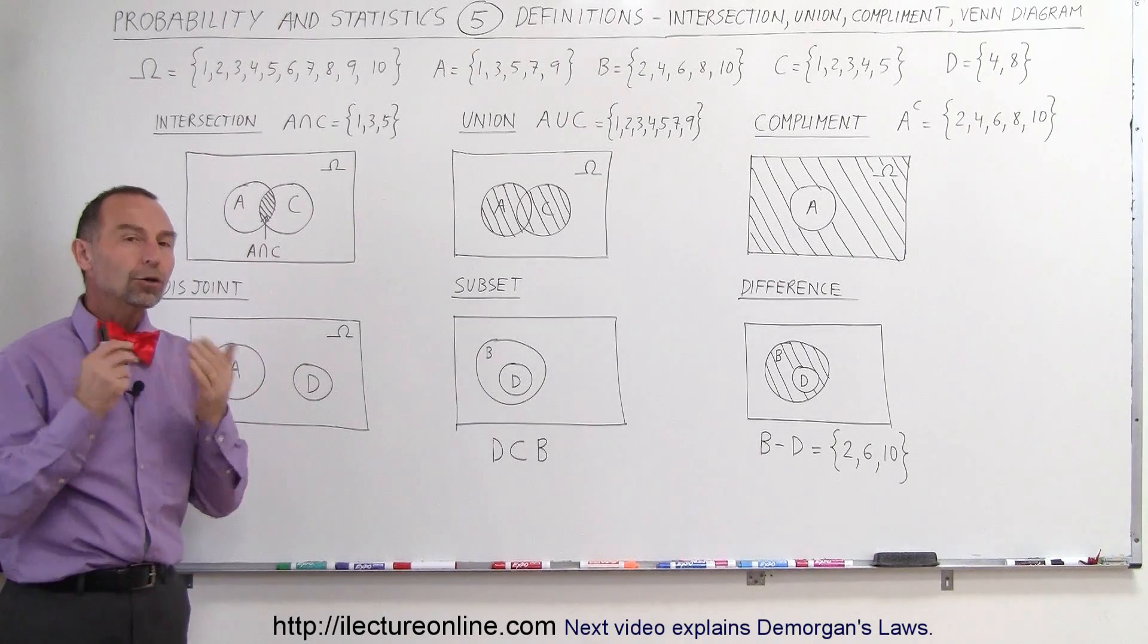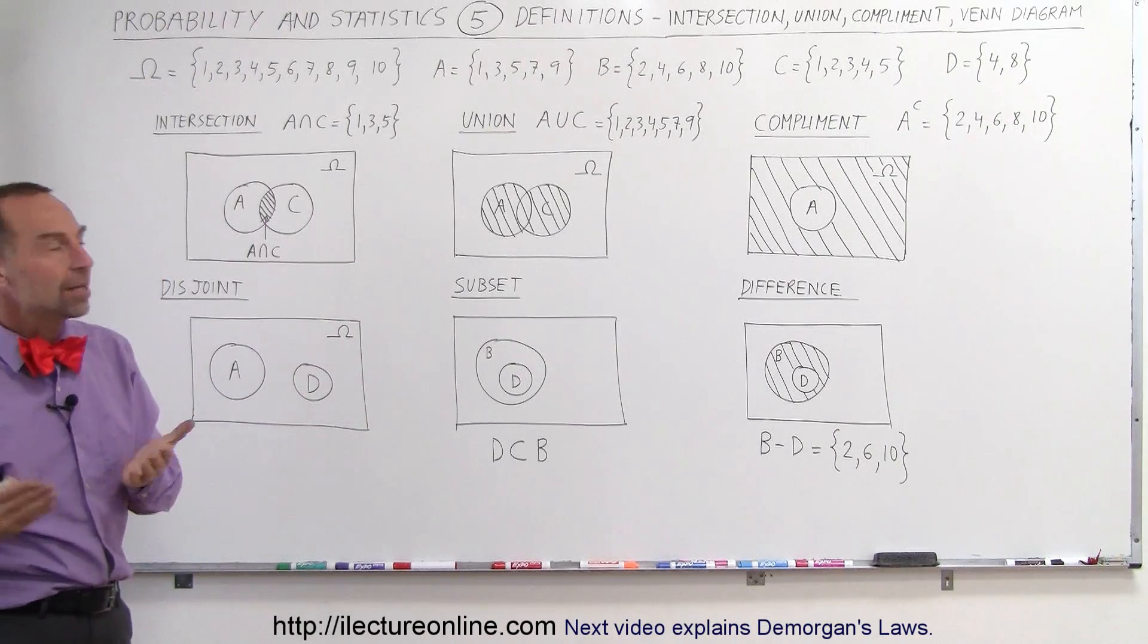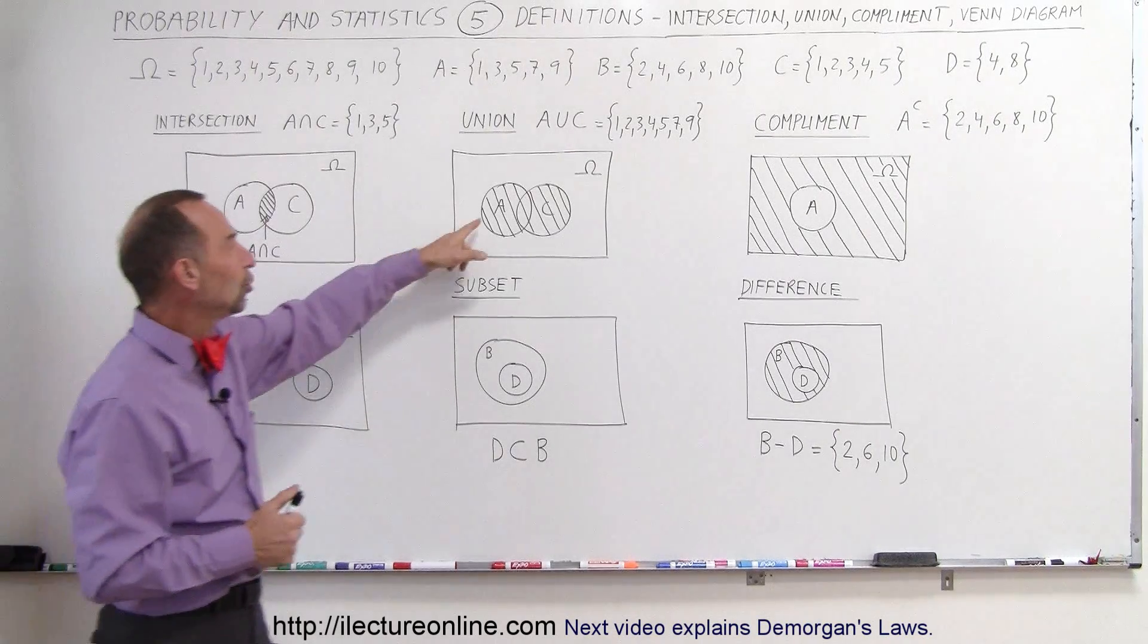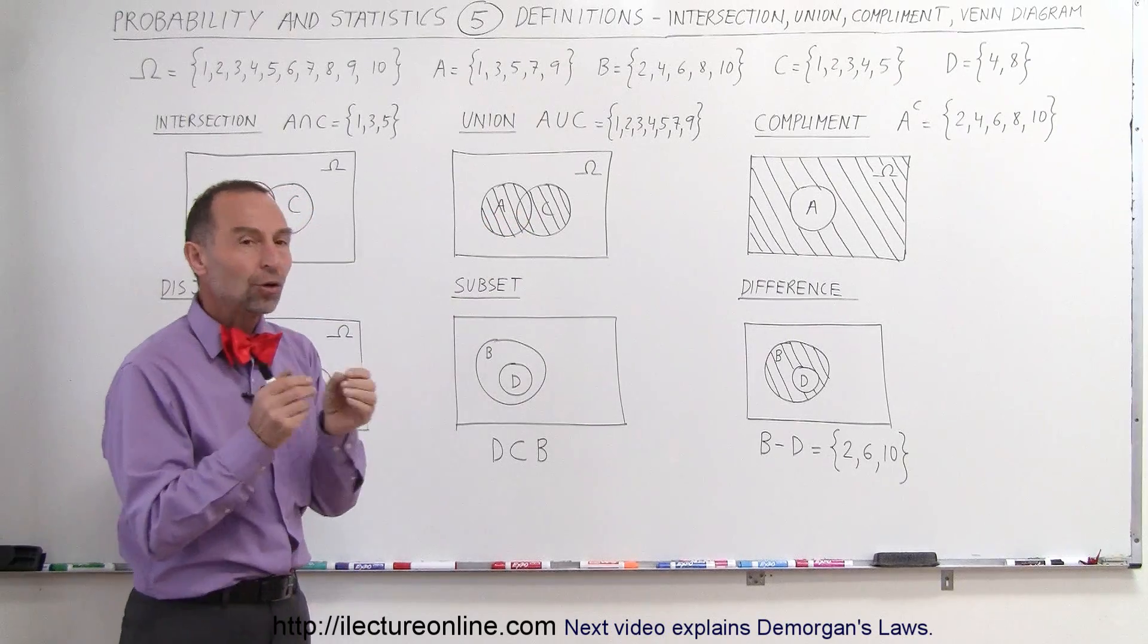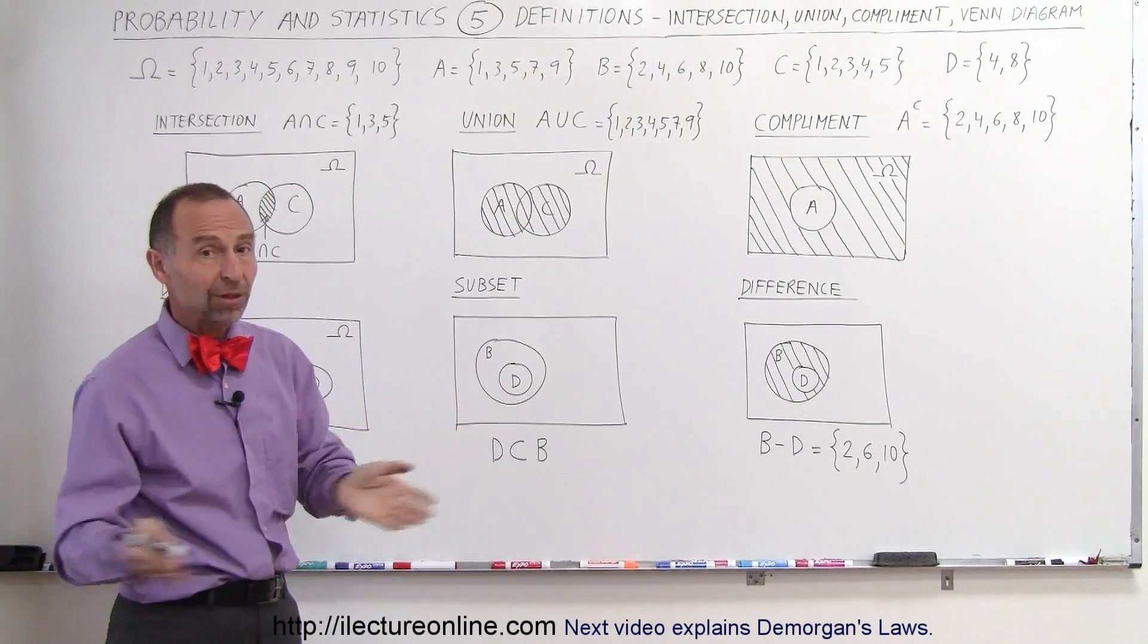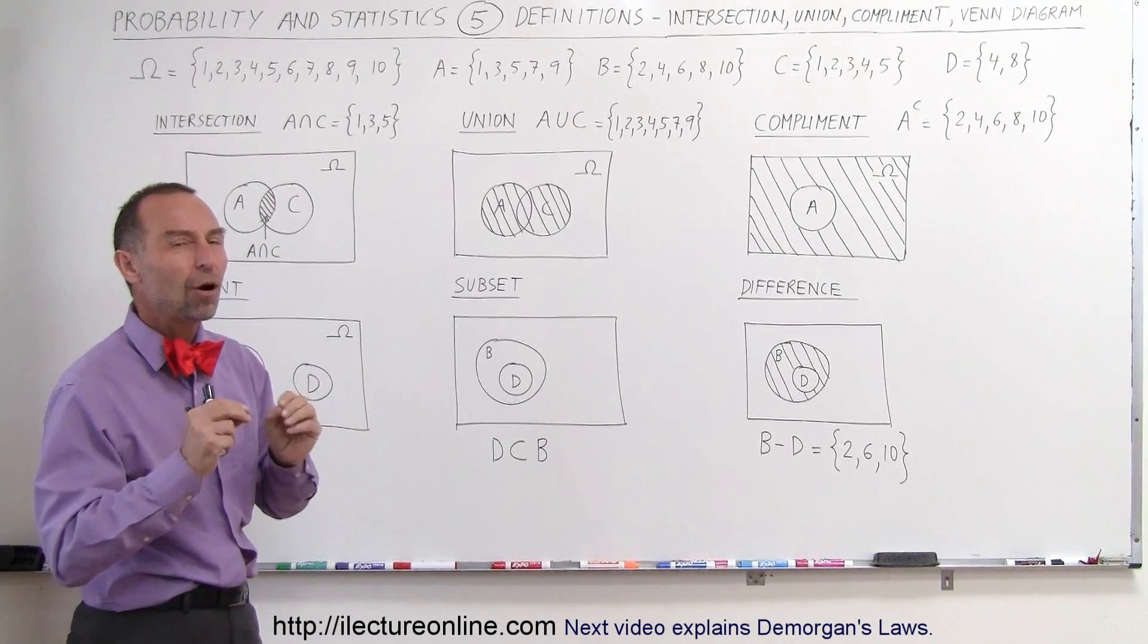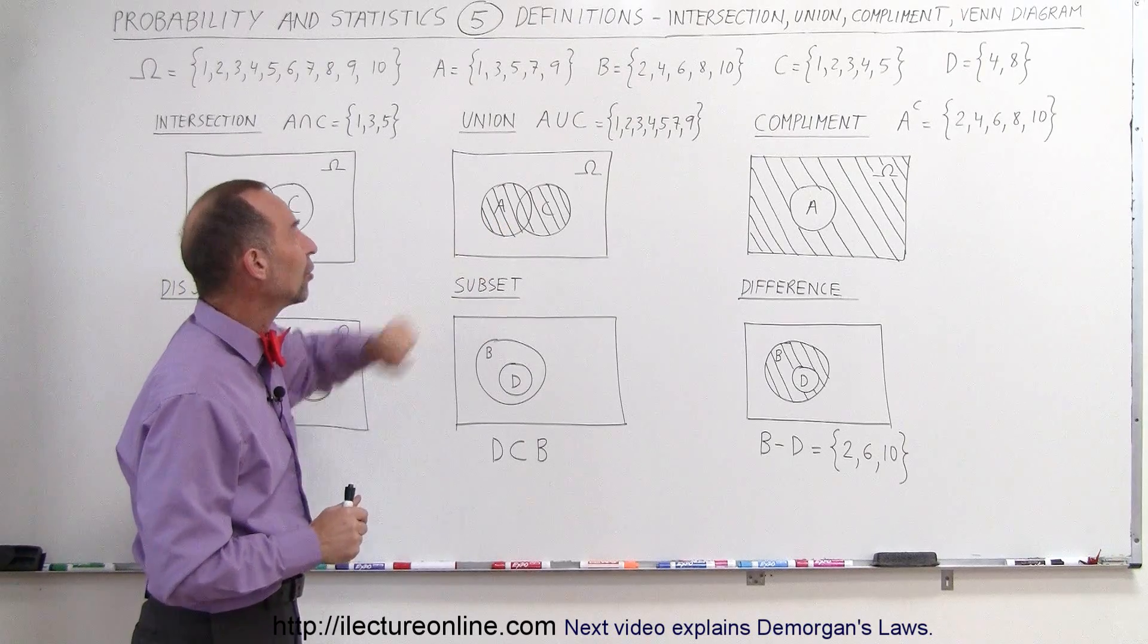The union are all the numbers that either belong to A and or C. In this case we have two subsets A and C. Notice it's all the numbers that belong to A and all the numbers that belong to C and the numbers that belong to both at the same time. It's the complete set of all the numbers that belong to A and or C.